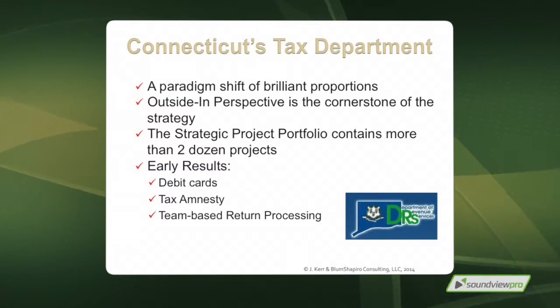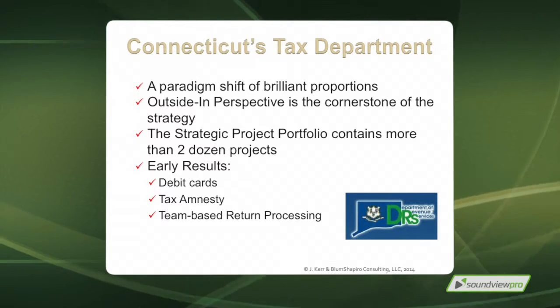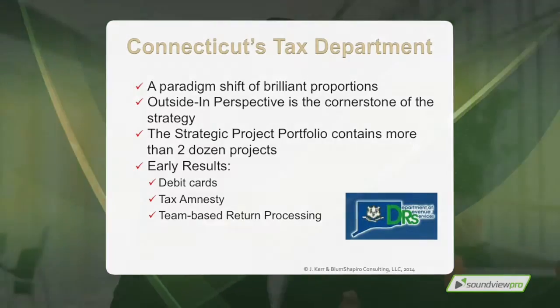They introduced the concept of an outside-in point of view — asking how do we improve the taxpayer experience in Connecticut to gain more compliance and make life easier for both the taxpayer and tax processing staff. Their strategic plan contains over two dozen projects and is highlighted by great successes, including debit cards for processing returns and giving refunds, tax amnesty that allowed people to pay back taxes without huge penalty — consequently gaining over 40 million dollars for the state — and team-based return processing.